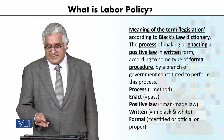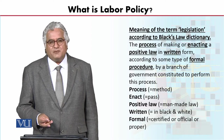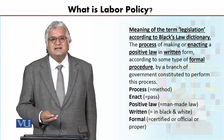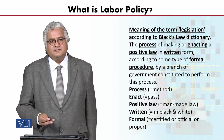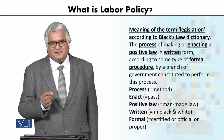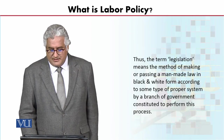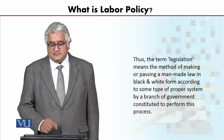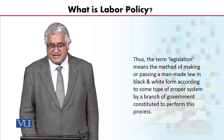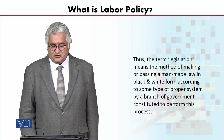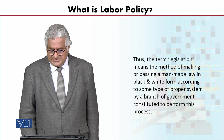यहाँ तीन बातें बड़ी important हैं: एक तो यह है कि यह elect होकर आती है, दूसरा यह है कि Parliament या provincial assembly में बैठती है, तीसरा lawmaking करती है। Organs of state जो हैं वो executive, legislature और judiciary हैं। Dear students, यहाँ पर positive law का मतलब है man-made laws. Thus the term legislation means the method of making or passing a man-made law in black and white, according to some type of proper system, by a branch of government constituted to perform this process.